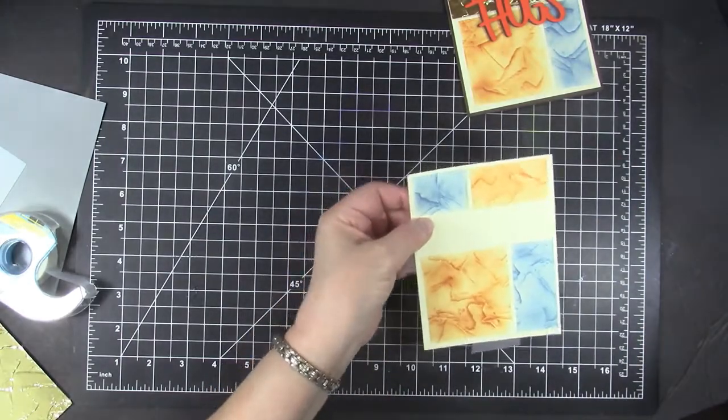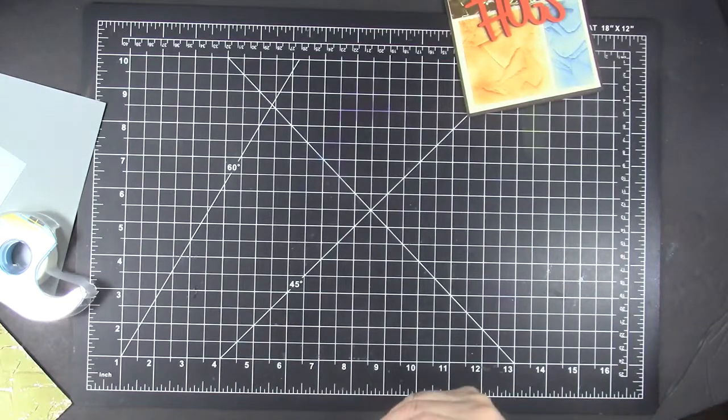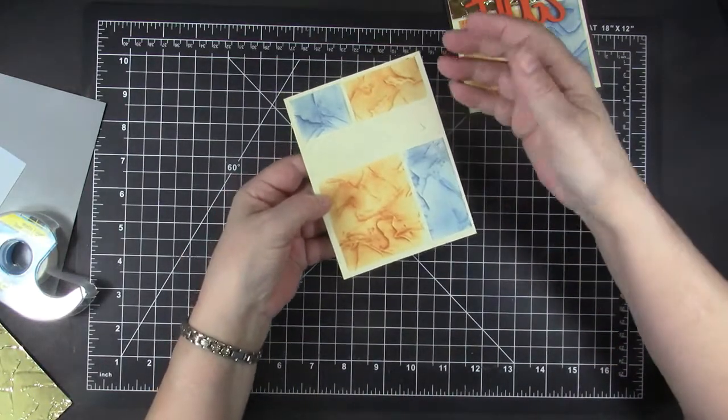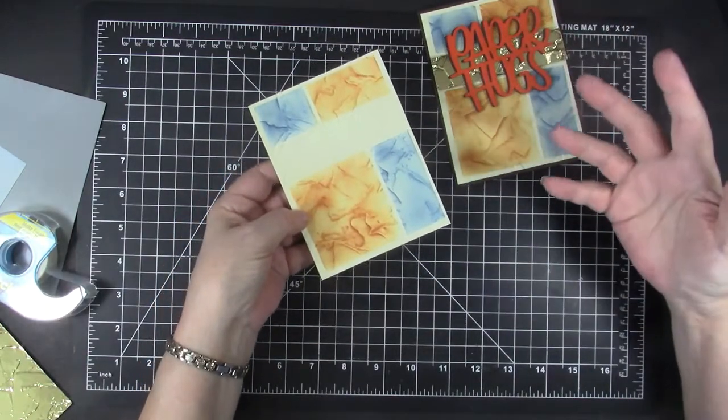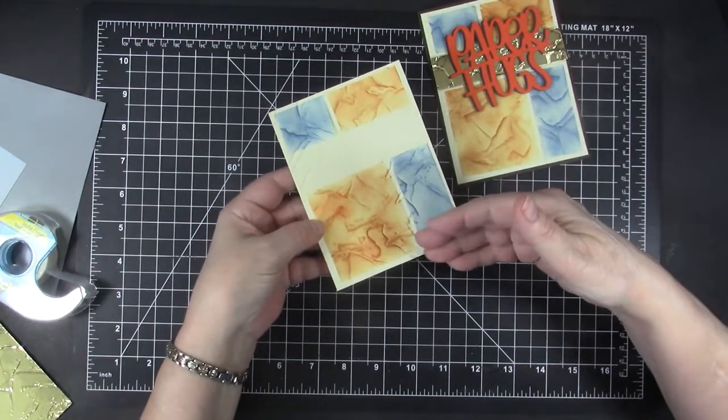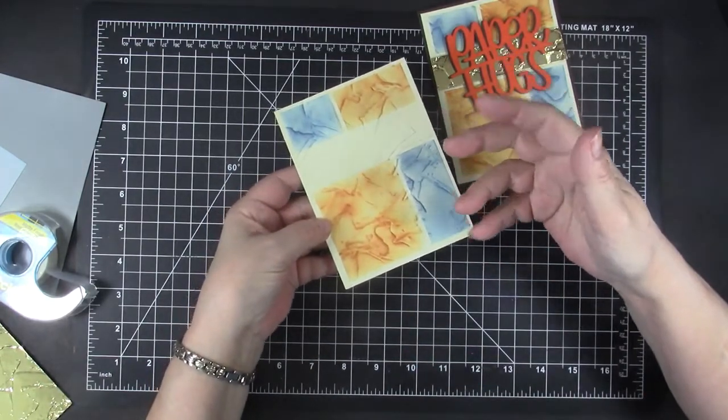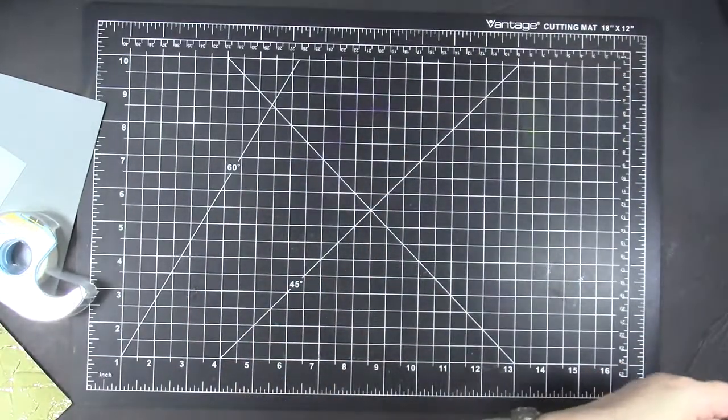I have completed that part of the card front, and I will add that gold strip across there and add the Paper Hugs or another sentiment. You can see how using the stencil with the embossing folders, especially these 3D embossing folders, creates a really cool look.